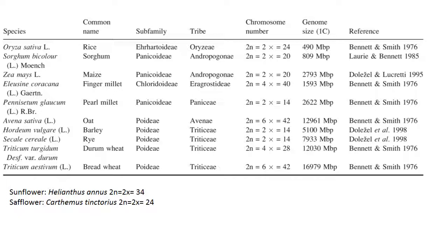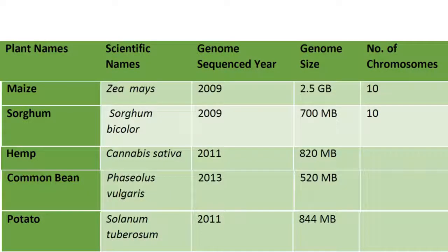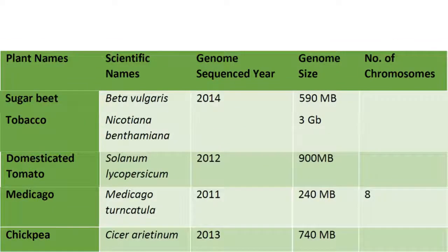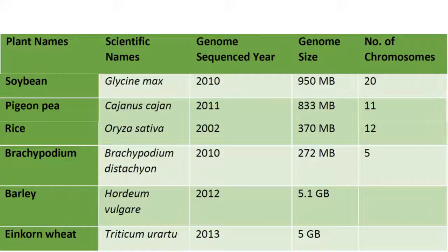The oilseed crop sunflower (Helianthus annuus) has 34 chromosome numbers in diploid form, and safflower (Carthamus tinctorius) has 24 chromosome numbers. Potato has 844 Mb genomic size, hemp 820 Mb, sugar beet 590 Mb, and tobacco 3 Gb. Domesticated tomato has 900 Mb, Medicago 240 Mb, chickpea 740 Mb, soybean 950 Mb, pigeon pea 833 Mb, Brachypodium 272 Mb, and barley 5.1 Gb.